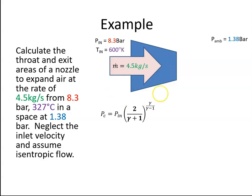So here's our nozzle again. We're told that the inlet pressure is 8.3 bar. We're told that the inlet temperature is 327 degrees Celsius, that converts to 600 degrees Kelvin. And we're told that the ambient pressure is 1.38 bar.